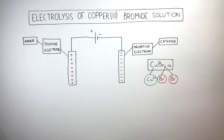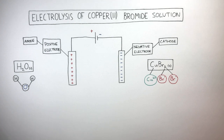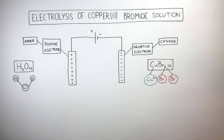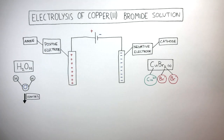As we're dealing with the electrolysis of copper bromide solution, the copper bromide has to dissolve in water. The molecular formula of water is H₂O, and we can represent this using a particle diagram as shown here. The hydrogen and oxygen atoms are held together by strong covalent bonds. When any ionic compound that is soluble in water dissolves, the water ionizes into hydrogen ions and hydroxide ions.